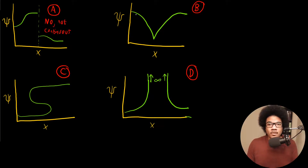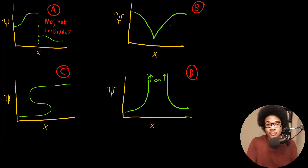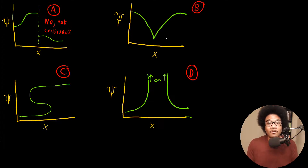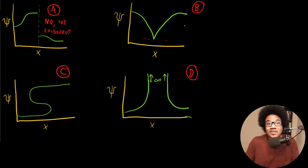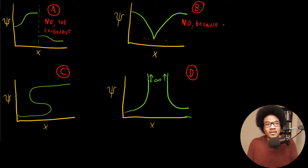Let's look at example B. This function comes to a little cusp and then goes back up — it's decreasing, comes to a cusp, and starts to increase again. If you remember from early calculus, any function that goes to a cusp is going to have a non-continuous first derivative. The slope at that point is not defined in a continuous way. So this is also not an acceptable wave function because the first derivative is not continuous.